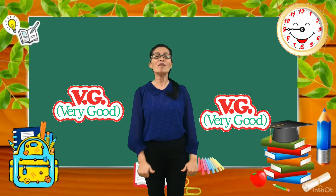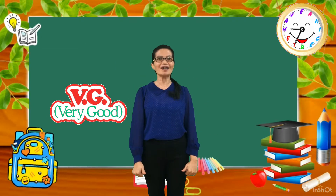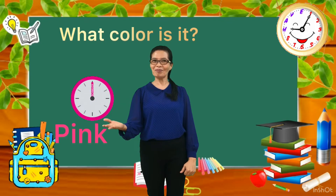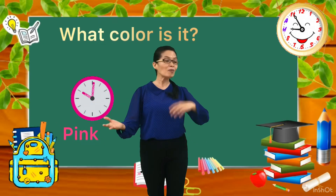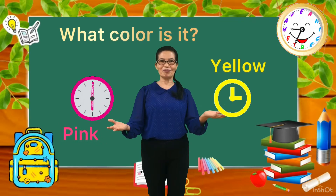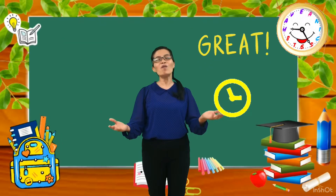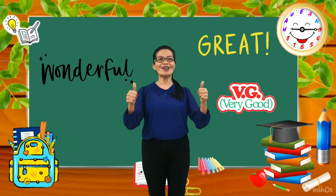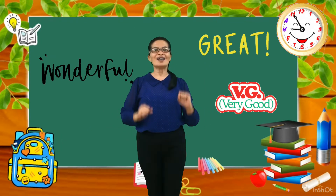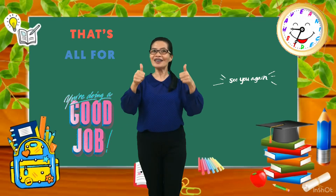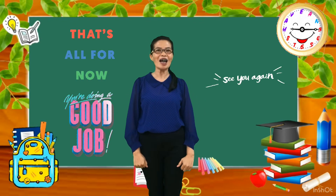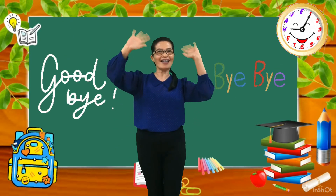Okay, how about the colors of a clock? What color is this? Pink. And how about this one? Yellow. Wow, wonderful. Very good, kids. So that's all for today, kids. Good job. See you again next time. Bye-bye.